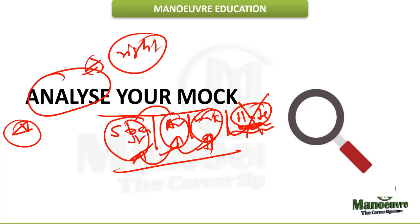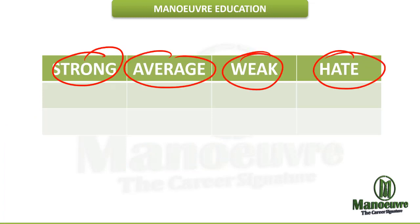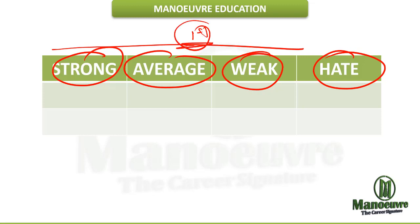After your first mock you will get proper clarity. As I mentioned — strong, average, weak, and height — divide yourself into these 4 categories after your first mock, and then start your preparation for CMAT. Taking the mock will help you understand what type of questions come in the exam, which topics need more work, and which sections you are weak or strong in.